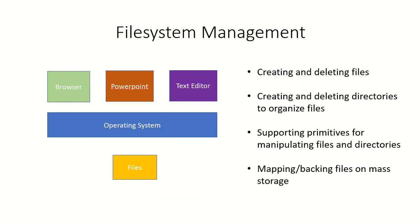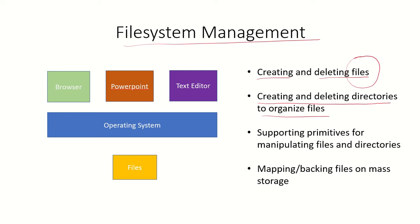File system management includes the creation and deletion of files. If the user wants to store any information, creating the file is a task of the OS. The OS also creates and deletes directories to organize files — there can be a tree-like structure for organization. There are primitives for manipulating files and directories, such as changing their location or access permissions, and the OS is responsible for all these primitives. The OS also maps files onto mass storage and keeps track of backing up these files.